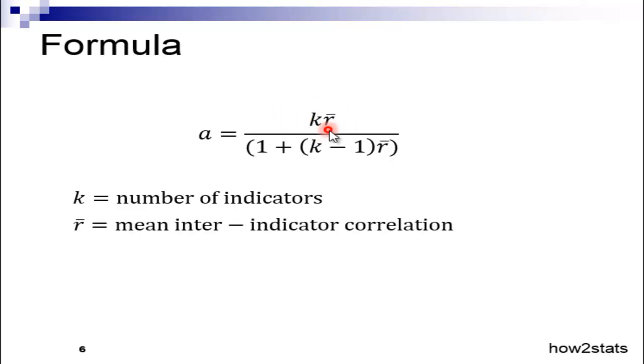This formula is actually standardized Cronbach's Alpha. It's standardized because it's based on correlations. You can calculate Cronbach's Alpha on unstandardized data like covariances, but I think this is the most intuitive way: simply the number of items multiplied by the average intercorrelation amongst those items, divided by the total variance in the composite scores.